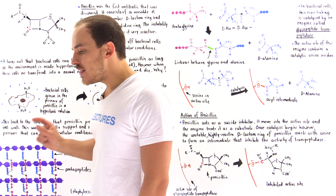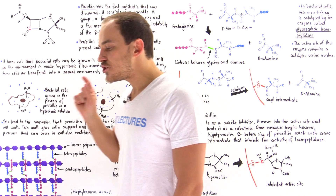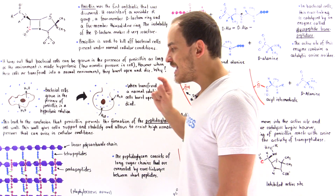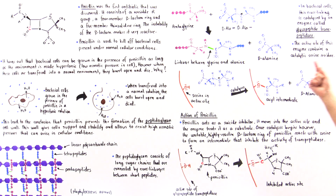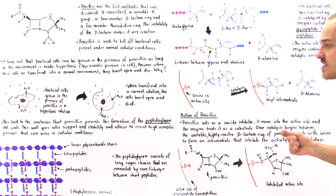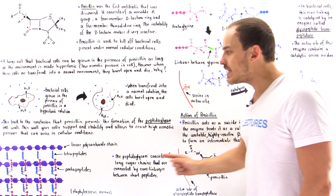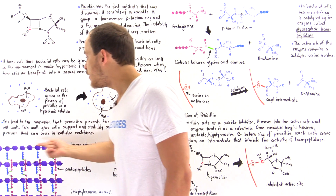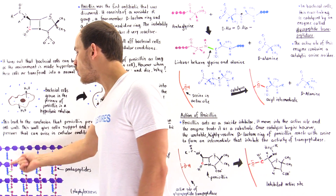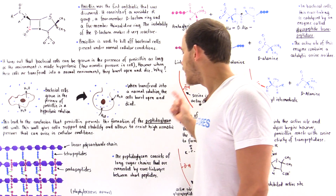This is precisely how penicillin actually acts. Penicillin acts as a suicide inhibitor, acting on the enzyme responsible for forming the cross-linkages that hold the sugar components of the peptidoglycan cell wall of bacterial cells together.